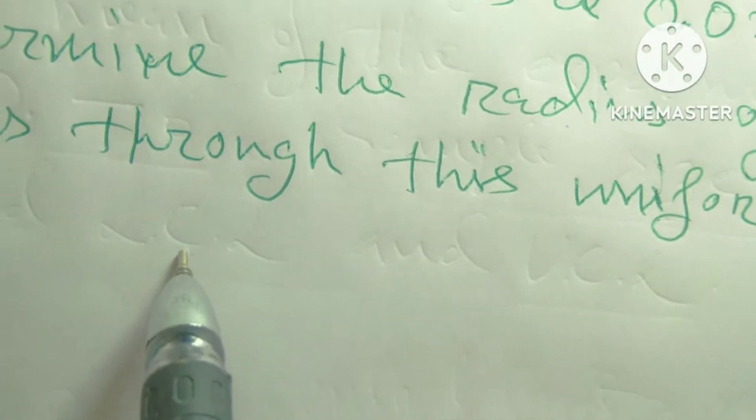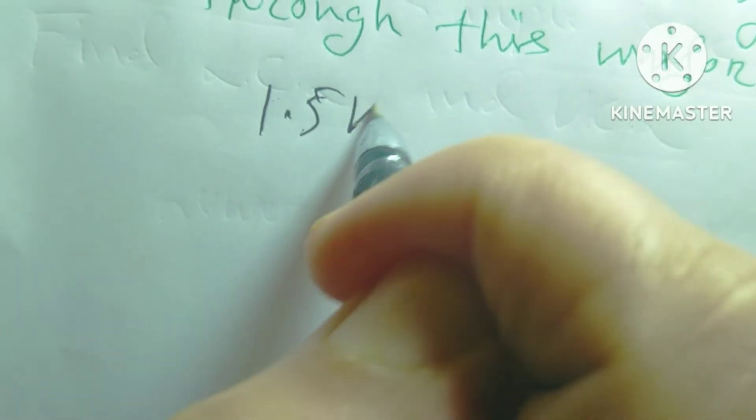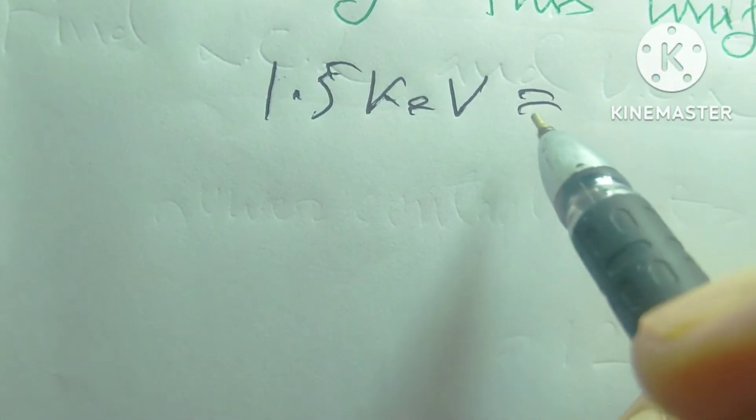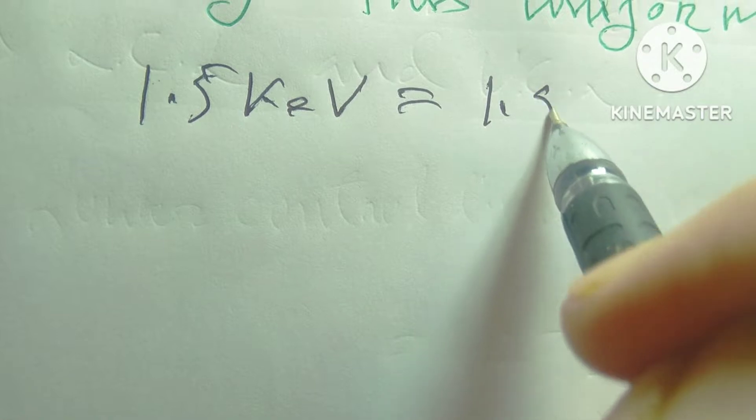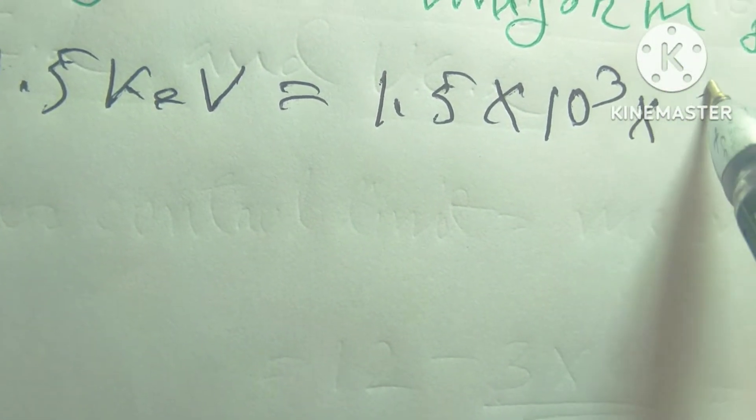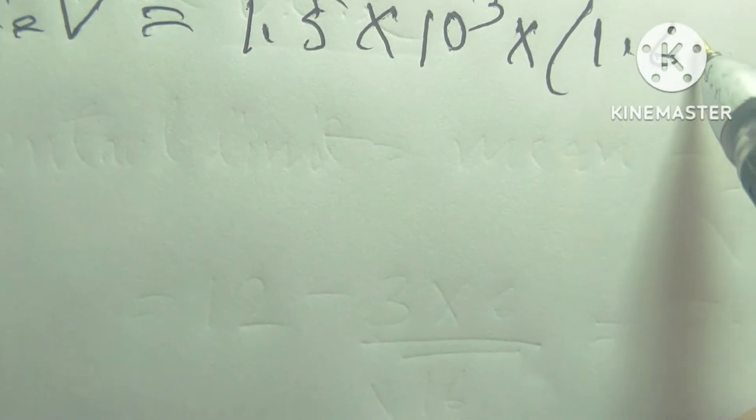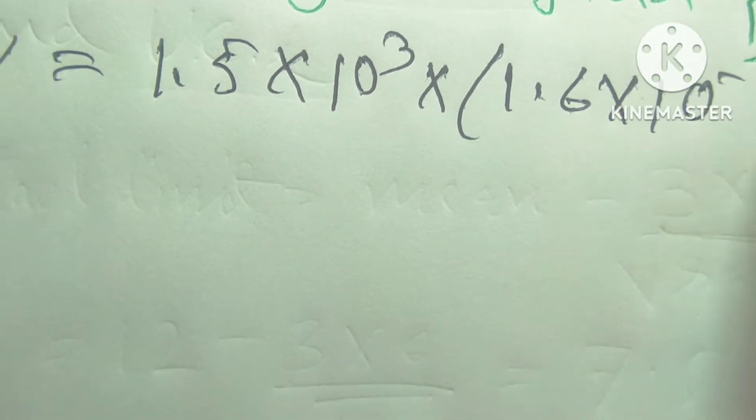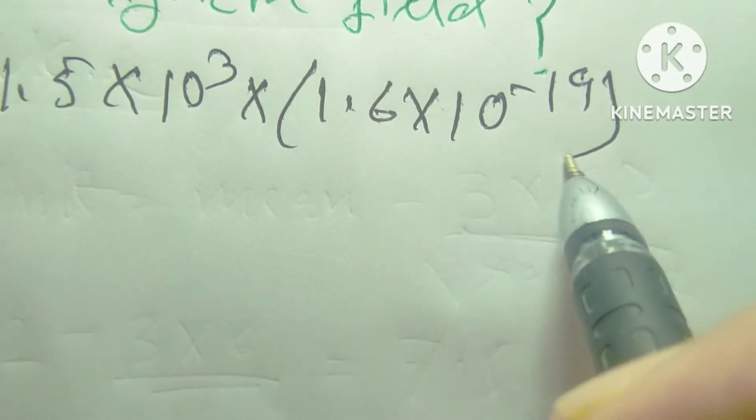At first you have to know 1.5 keV equals 1.5 into 10 to the power 3, and eV is equal to 1.6 into 10 to the power minus 19 Joule.